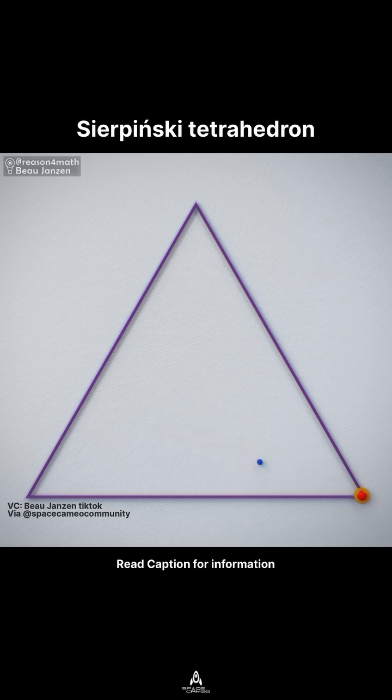That point then becomes the new starting location to repeat this process. Pick a corner at random, draw a line from the new starting point to the corner, find the center of that line, and repeat. With these new points, we can continue to pick random corners, draw lines, and find their centers.